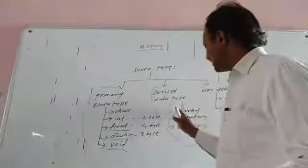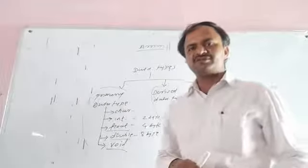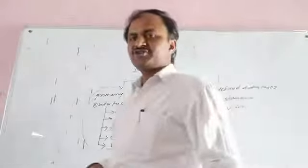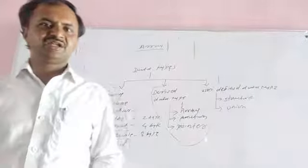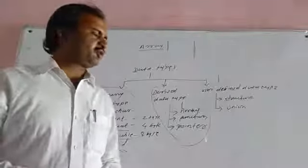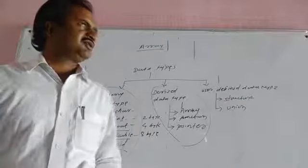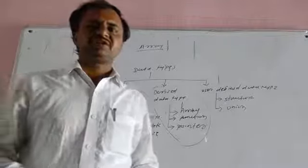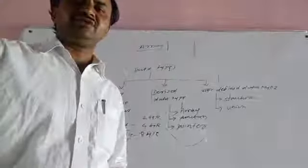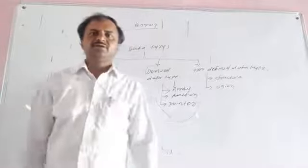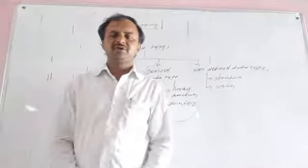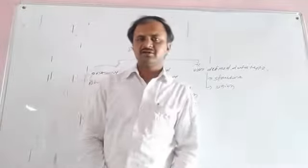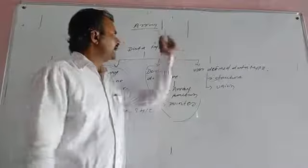Array is a collection of similar data elements that share a common variable name. Function is a self-contained block of statements. And pointer is used to reference another variable's memory location. These are the three different derived data types used to store data values.